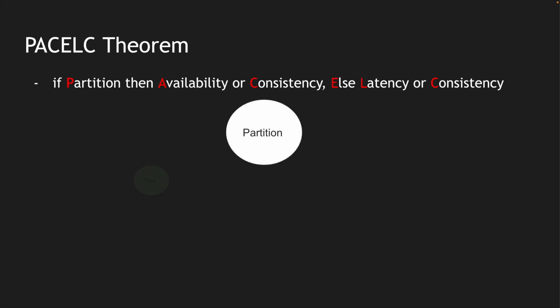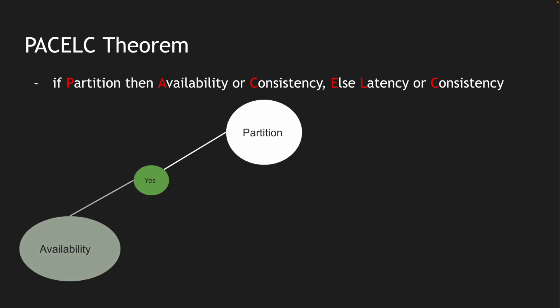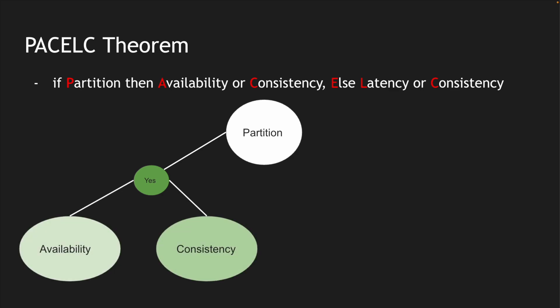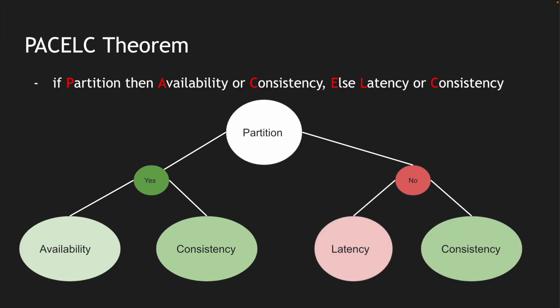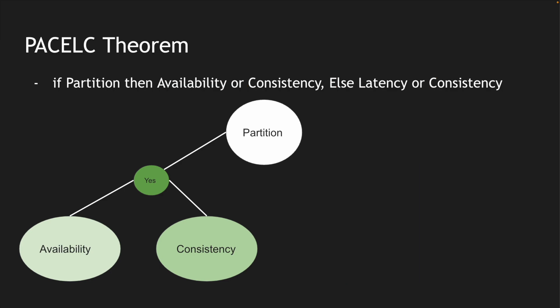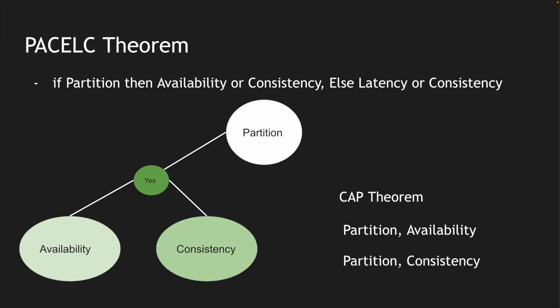At a high level, whenever there is a partition, you can either choose availability or consistency — and this is essentially the CAP theorem. If there is no partition, you can choose either latency or consistency. A simple way to remember it: partition-availability and partition-consistency cover the CAP theorem part, while the no-partition side introduces the latency trade-off as the new addition.